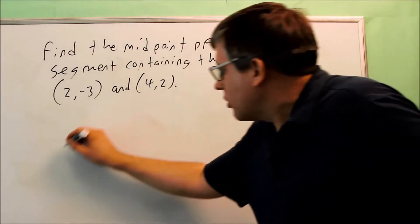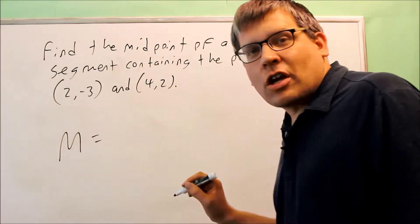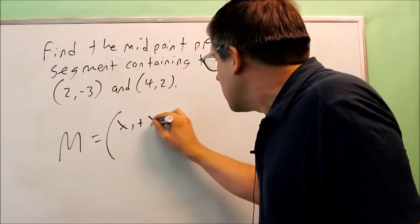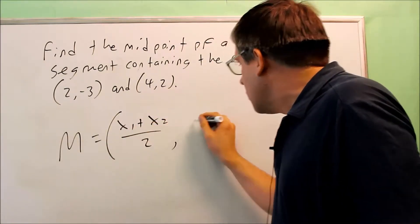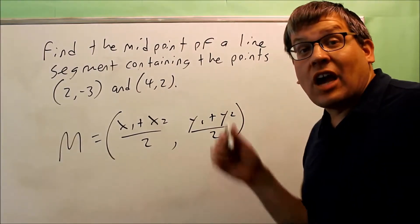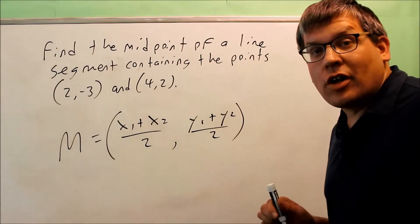So recall that the midpoint formula is the average of the x values and the average of the y values. So x1 plus x2, all that over 2, and y1 plus y2 over 2. That's the midpoint formula, the average of the x values and the average of the y values.